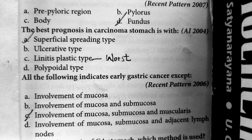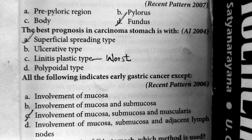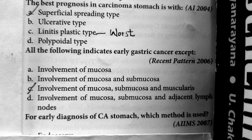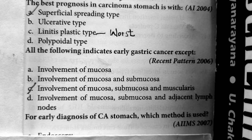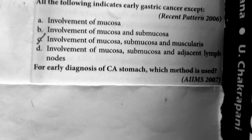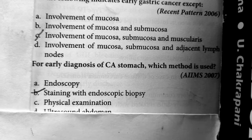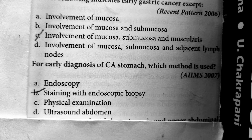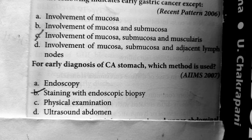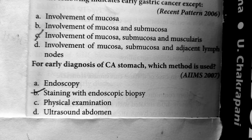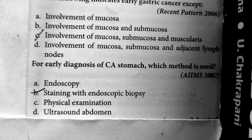Early gastric cancer is classified by the Japanese classification. Question 5: For early diagnosis of carcinoma stomach, which method is used? For early diagnosis of carcinoma stomach, you should do an endoscopy, obtain a biopsy, and then stain it with H&E staining and perform microscopic examination.